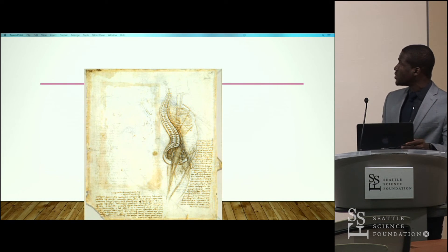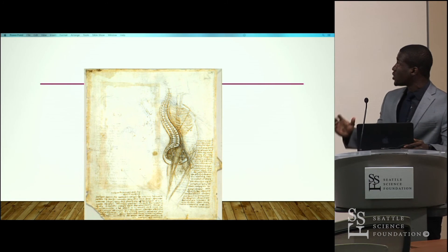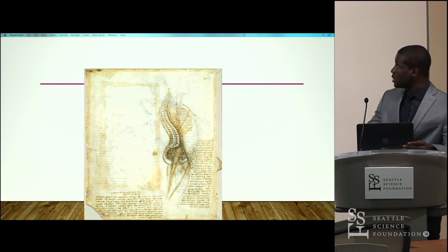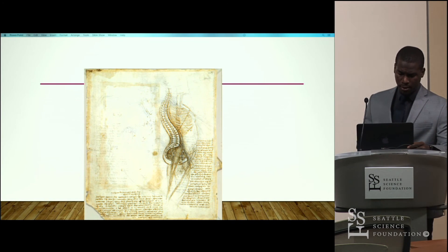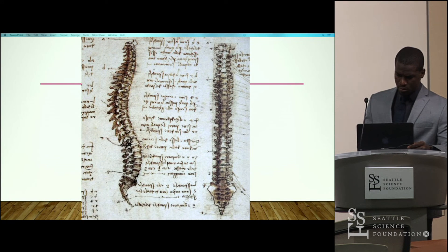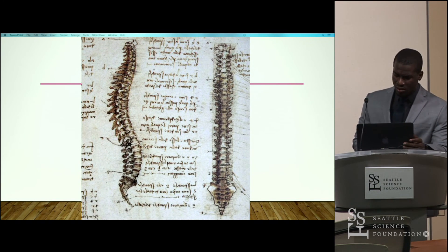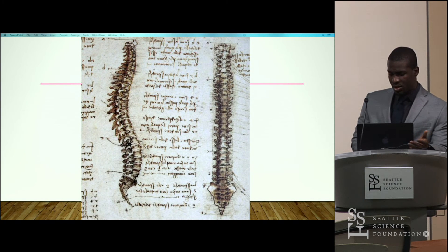In another drawing, he correctly portrays the S-shaped curvature of the spine. However, the ribcage is disjointed and not connected to the spine as it is in actuality. In what is actually one of the most accurate presentations of the spinal column at Leonardo's time — and even to today — he replicates the articulations of the vertebrae and the structural dimensions of the vertebrae with great exactitude. In the absence of high-definition imaging modalities, he was able to accurately delineate the vertebral column structure with such preciseness, which was no small feat.